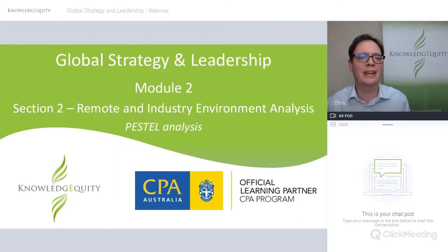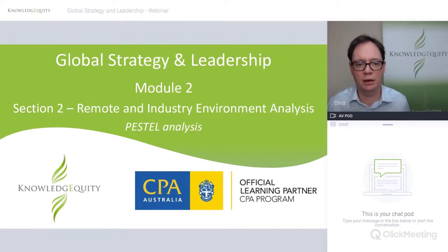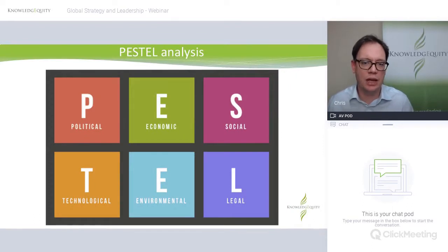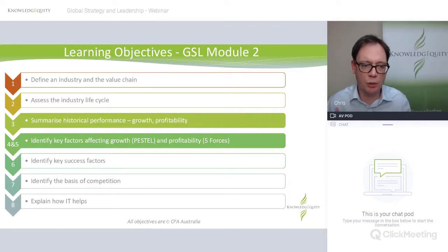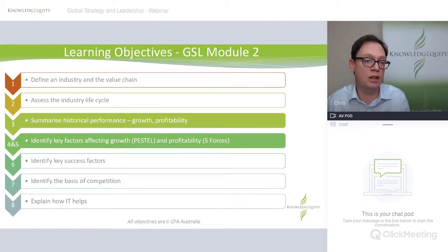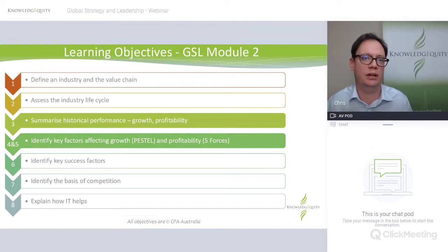In section two of Module 2, we're talking about both a remote environment analysis and an industry environment analysis — they are different things. Let's start with the remote one and this idea of PESTL. We're looking at historical performance, growth, and profitability, but also factors affecting growth — and really that should have the word 'future' in there. What we care about in the analysis of an industry is what's going to happen in the future for this industry and the organisations in it.